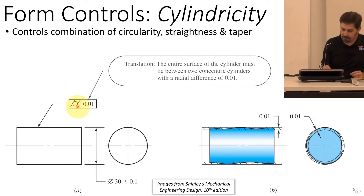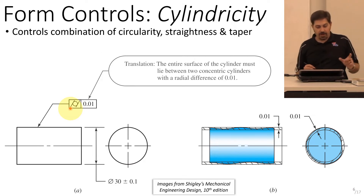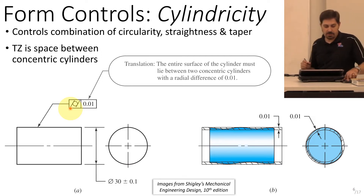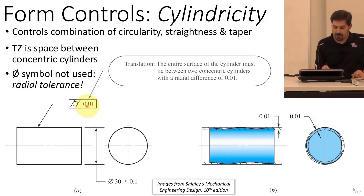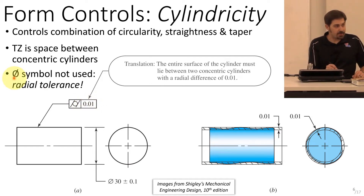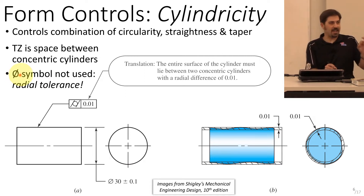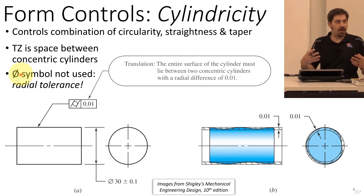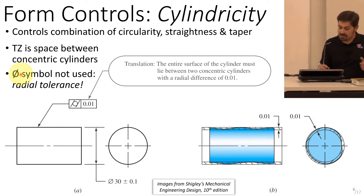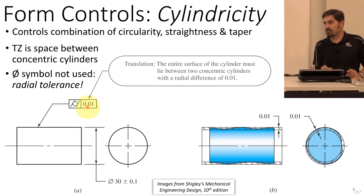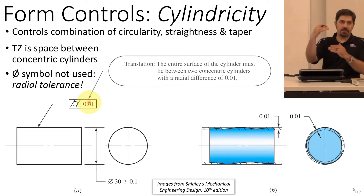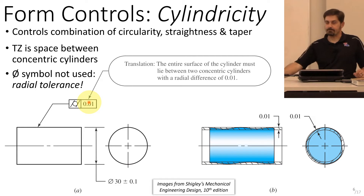Cylindricity controls circularity, but also simultaneously controls straightness and taper. The cylindricity tolerance zone is the space between two concentric cylinders — all surface points of the cylindrical feature must lie in that space. If the centerline gets too bent, the outer surface starts to violate either the inner or outer cylinder. The value listed does not have the diameter symbol in front of it because the tolerance zone is actually two cylinders, not one. The number represents the difference in radius between the inner and outer cylinder.